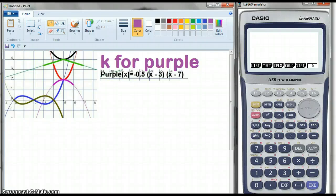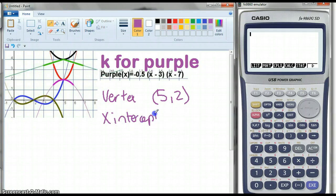A lesson on k. For this purple graph, I can see the vertex is actually 5,2, and I can see the x-intercepts are 3 and 7. So I could do it both ways.